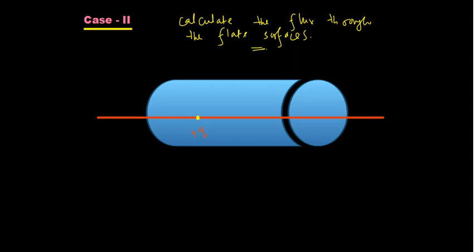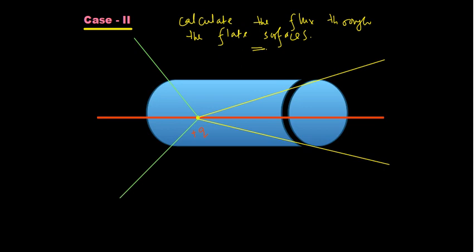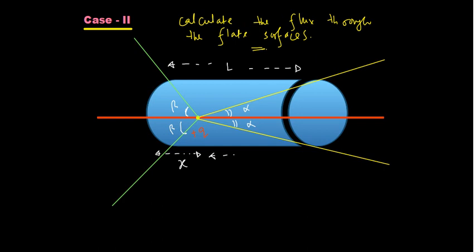Same technique we will adopt. We draw the lines first. We take the angle to the left face as alpha and the angle to the right face as beta. The total cylinder length is L. The charge is at distance x from the left end, so from the right end it is L − x. The radius of cross-section is capital R.